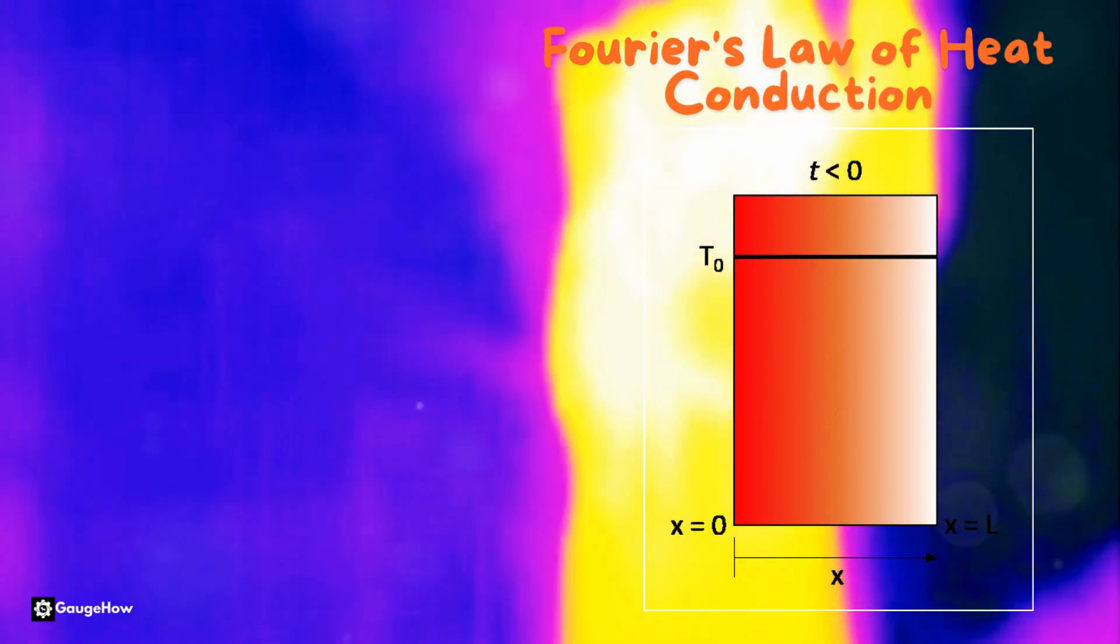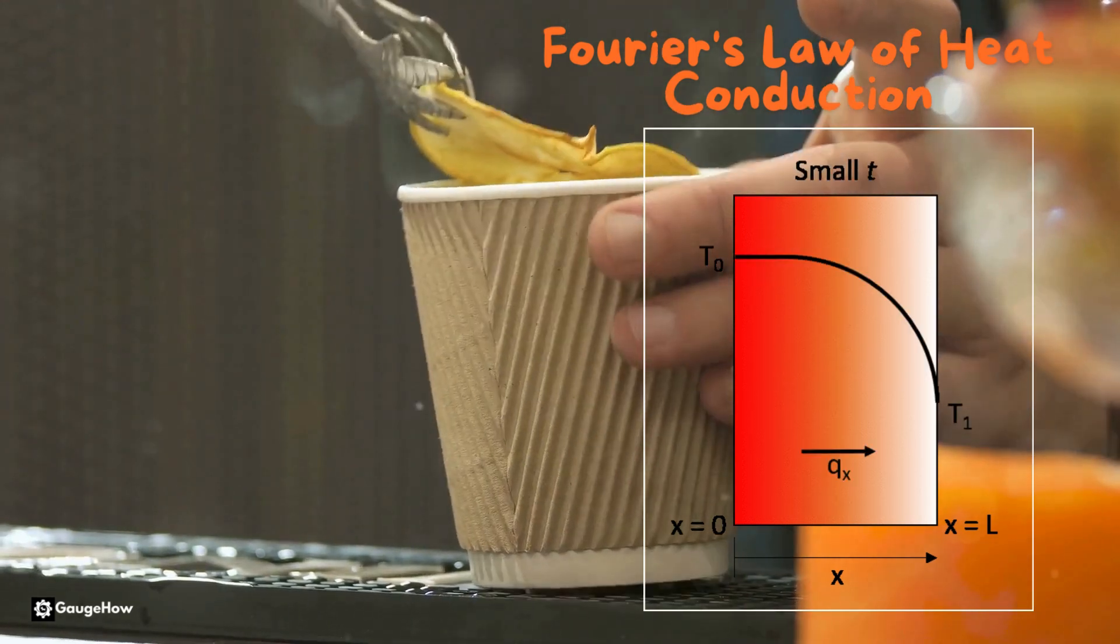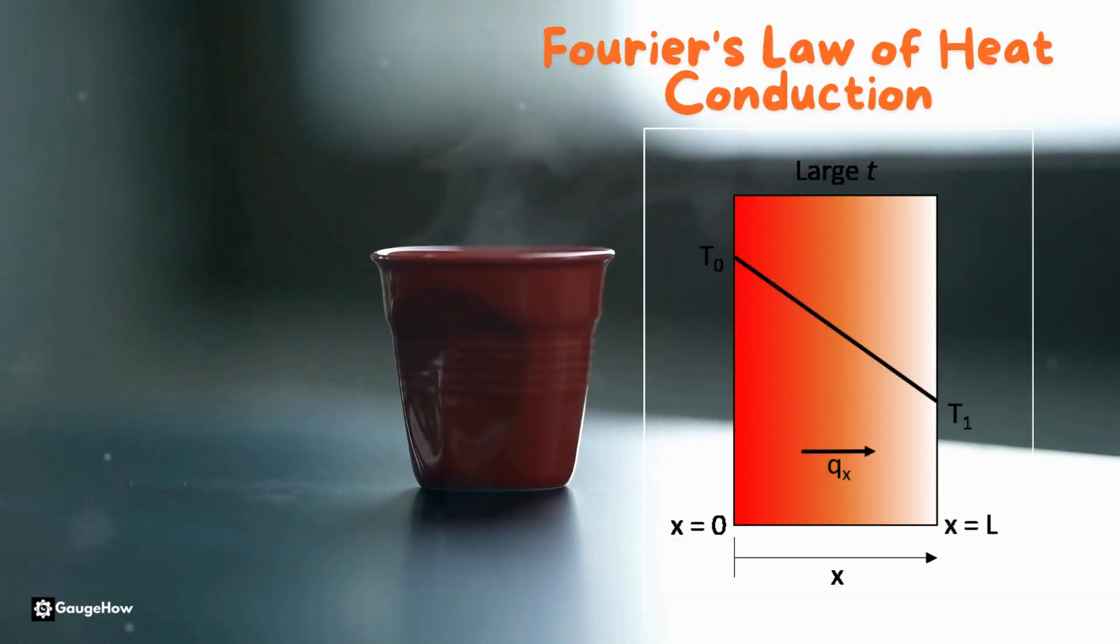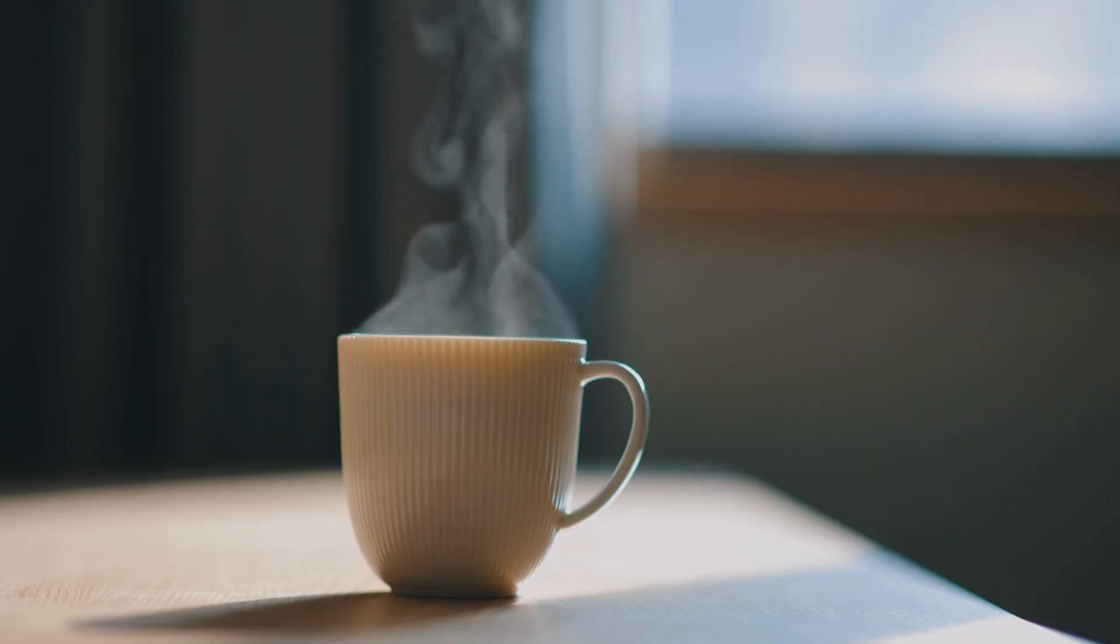Fourth, Fourier's law of heat conduction. Heat flows from hot to cold, and the bigger the temperature difference, the faster the flow. Your coffee cooling down? Blame Fourier.